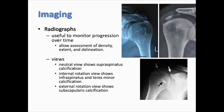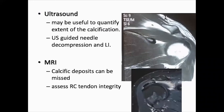Imaging starts with plain radiographs, which play a very important role in diagnosis and are useful to monitor progression over time, allowing assessment of the density, extent, and delineation of the lesion. Views in AP neutral, external, and internal rotation help identify the site of calcification and the tendons involved. Ultrasound may be useful to quantify the extent of calcification and can be used for guided needle decompression and local injection. MRI is important to assess rotator cuff integrity, but care should be taken as the diagnosis can be missed, especially if no plain films are available at the time of initial presentation.